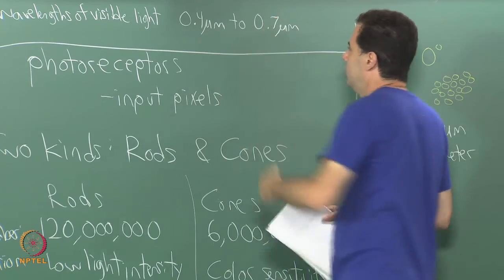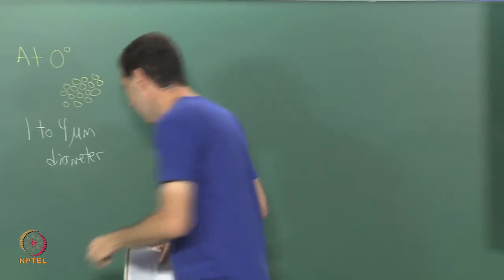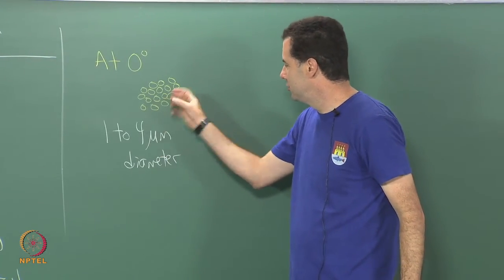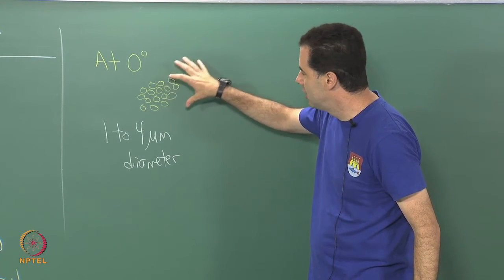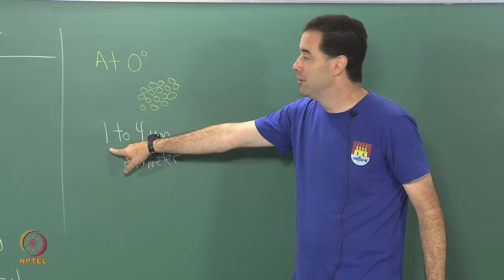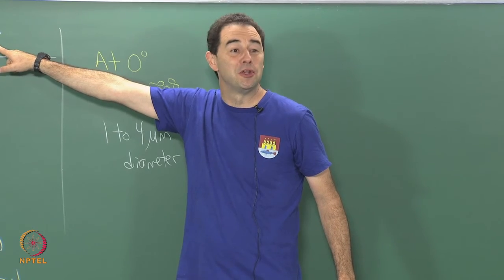Using 10 to the minus 6th units instead of 10 to the minus 9th units, we see that at the very center of the fovea these cones pack in to the size of 1 micrometer, which is not very much larger than the wavelength of visible light, which I find really incredible.